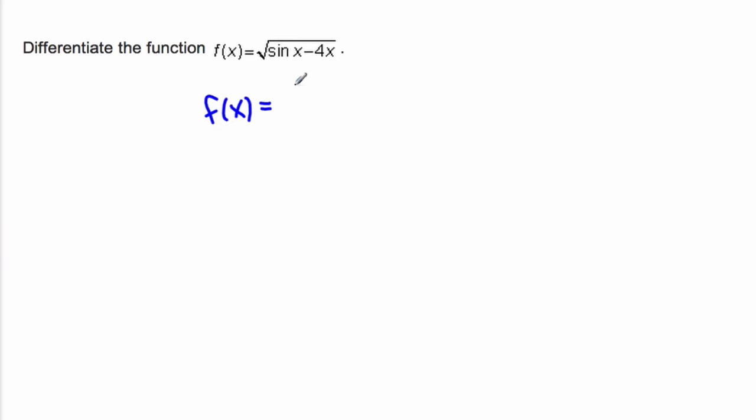So we have our outside function, which is just the square root of something. I'm going to rewrite it as to the power of one-half, so I can use the power rule. And then the inside function is sine x minus 4x.